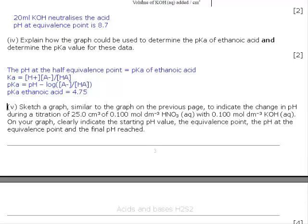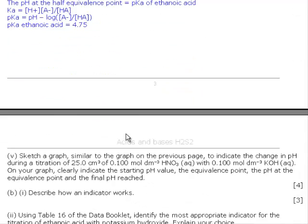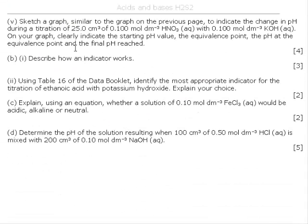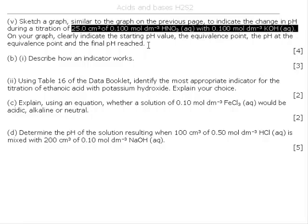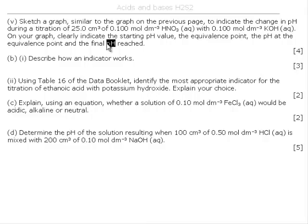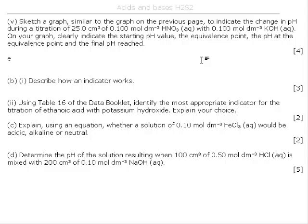The next thing we have to do is sketch a graph similar to the graph on the previous page to indicate the change in pH during a titration of 25 ml of strong acid with KOH. On your graph clearly indicate the starting pH, the equivalence point, the pH, and the final pH reached. We've got 25 ml of 0.1 molar, and we're titrating with 0.1 molar. So the equivalence point, because it's a strong acid and a strong base, will be exactly 25 cm³.